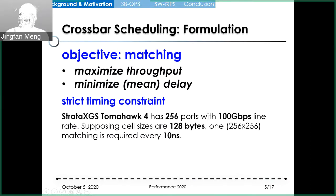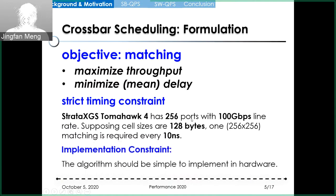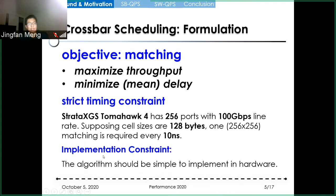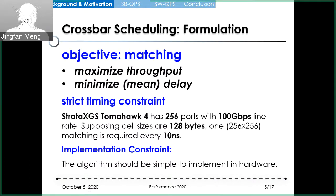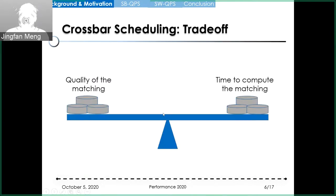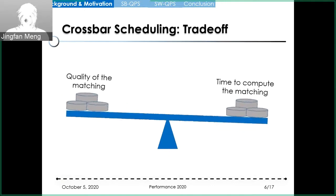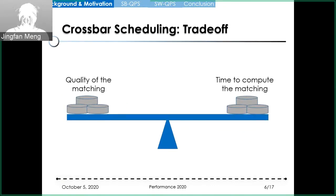The duration of the time slots is really short for modern switches, but the number of input and output ports is getting larger and larger. For example, in order to achieve the 100 Gbps line rate as in Tofino 4, the scheduler has only 10 nanoseconds to compute a matching between as many as 256 input ports and 256 output ports. Furthermore, the scheduling algorithm should be simple enough to implement in hardware. There is a well-known tradeoff between the quality of the matching and the time needed to compute the matching, so it is really difficult to compute high-quality matchings in small time with a large number of inputs and output ports.